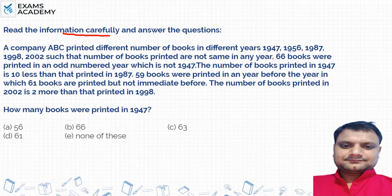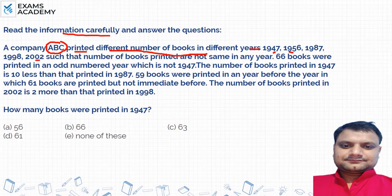It says that a company ABC printed different numbers of books in different years: 1947, 1956, 1987, 1998, and 2002. The number of books printed is not the same in any year — in any year, the same number of books is not printed.